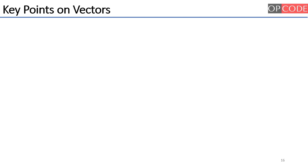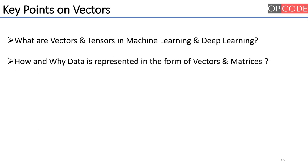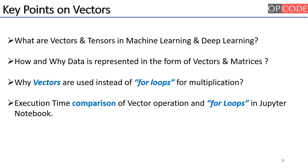In this video, we will discuss what are vectors and tensors in machine learning and deep learning, how and why data is represented in the form of vectors and matrices, why vectors are used instead of for loops for multiplication and other calculations. Finally, we will compare the execution time of vector operation and for loops in Jupyter Notebook.